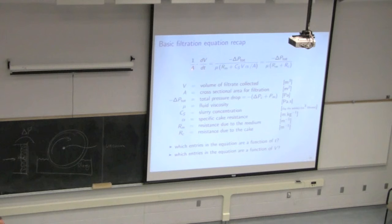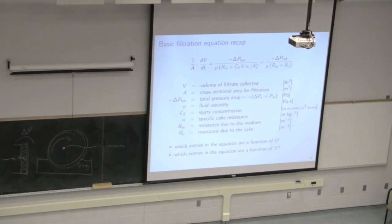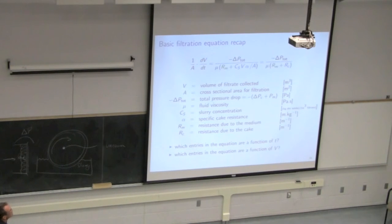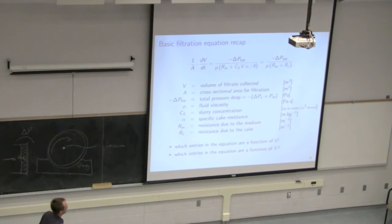We need to apply some external system to keep delta P constant for a constant pressure system. V, the volume of filtrate, is a variable in our derivative and will definitely change with time. So dV/dt is going to change with time — unless I alter my pressure to maintain a constant flow leaving.